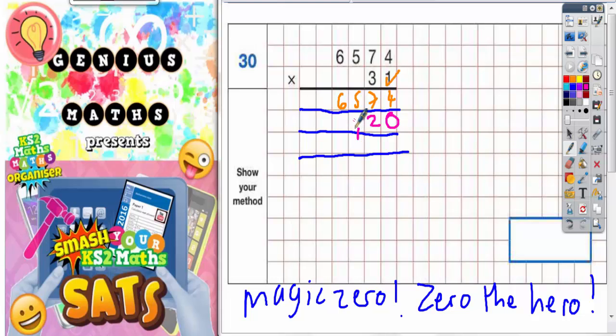Put the two in, carry the one. Three sevens are twenty-one, plus one is twenty-two. Put the two in, carry the two. Three fives is fifteen, plus that two is seventeen. Put the seven in, carry the one. And three sixes are eighteen plus the one is nineteen.